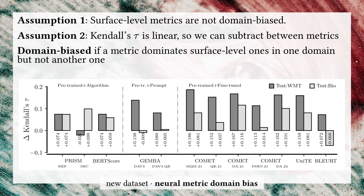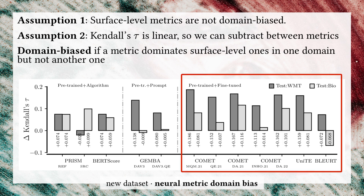We can see this in the figure, which contains the differences against the unbiased metric. If it's positive, then it's better than the unbiased metric. The fine-tuned metrics are much better than the surface-level metrics — they dominate surface-level metrics on the general domain but not on the biomedical domain. So they struggle on this new domain, and we call them domain biased.